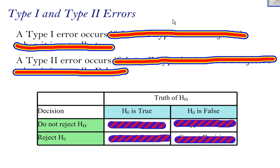When you make a decision with a hypothesis test, you're either going to reject the null hypothesis or you're going to fail to reject the null hypothesis or not reject it. Now you could be right or you could be wrong.